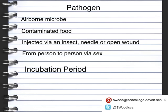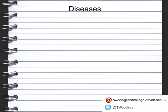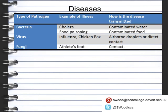It's not necessarily a pathogen that causes the problem — what they can do is actually produce toxins which are released into the body, and those chemicals can then cause the problem. Here are a list of common diseases you've probably heard of. We've got cholera or food poisoning, and these are caused by bacteria. Cholera can come from contaminated water, whereas food poisoning obviously comes from contaminated food.